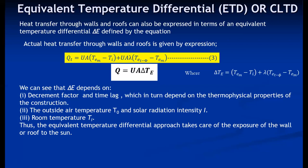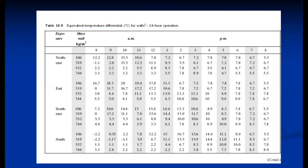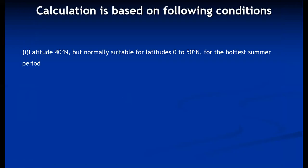The equivalent temperature differential approach takes care of the exposure of the wall or roof to the sun. Based on this, values of delta T are calculated for different exposures — north, east, south — for different mass fluxes of construction materials, and for different times, since solar radiation intensity and outside air temperature vary hourly. This data is available in most data books for 24-hour operations and is calculated based on standard conditions.